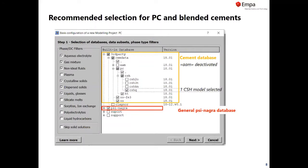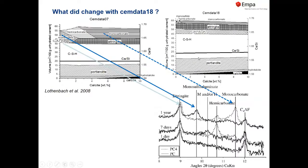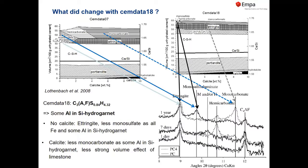This shows how your input should look for Portland cement. Here is a summary of the changes from CEMDATA07 to CEMDATA18: mainly, iron now goes entirely into siliceous hydrogarnet, which affects the amount of AFM phases like monosulfate and monocarbonate. That's basically the main difference.